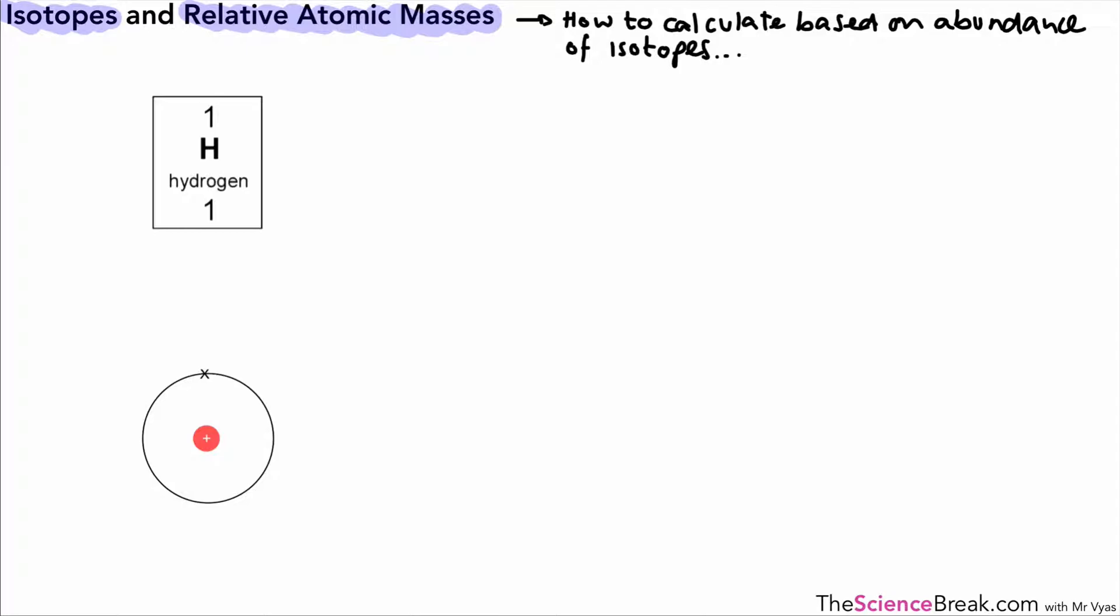First, we have information about hydrogen from the periodic table, and from that we can work out the number of protons, electrons, and neutrons. Hydrogen has one proton, one electron, and in this case no neutrons. We can draw the atom with one proton and one electron. This is hydrogen.